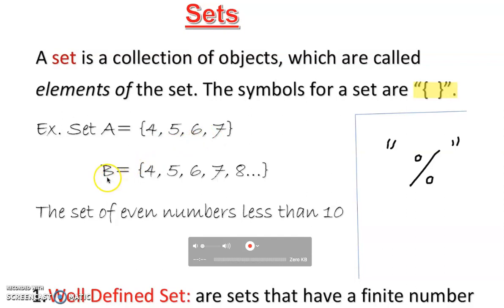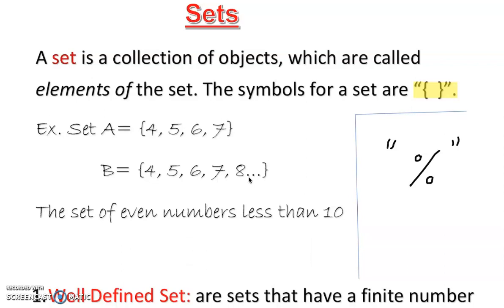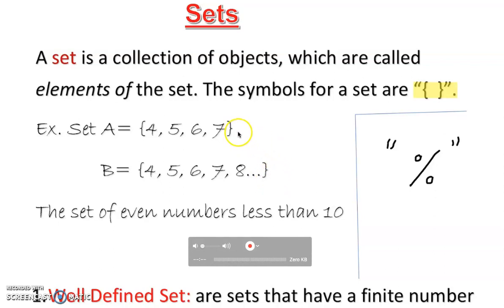Set B = {4, 5, 6, 7, 8, ...}. The dot dot dot is an ellipsis, meaning it goes on and on — it is not limited. It is called infinite. This leads to another concept: if you know how many numbers are there, it's called a well-defined set. If you don't know how many numbers there are, it is not a well-defined set.